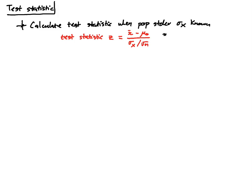So x-bar is the sample mean, mu sub zero is the hypothesized value which is the value that shows up in the hypotheses.